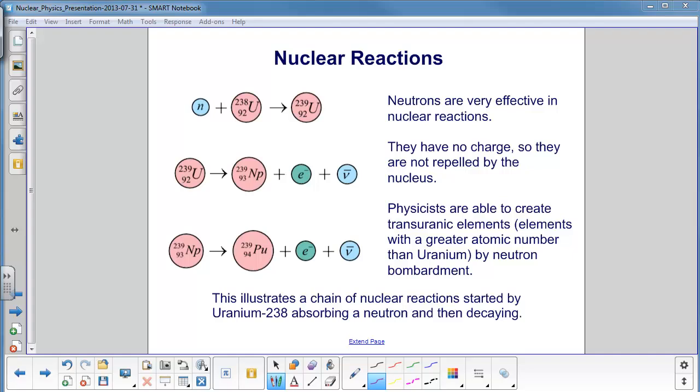Neutrons are very effective in nuclear reactions, and the main reason is right here. They have no charge, so they are not repelled by the nucleus. Had Rutherford done his gold foil experiment with neutrons, which of course they hadn't realized that neutrons existed at that time, the neutron would not have bounced off the nucleus. It would have been hard to find the nucleus because the neutron could have gone right into the nucleus and been absorbed by it. Physicists have been able to create elements with greater atomic numbers than uranium, and these are only created in the lab. They do not exist naturally on the Earth by neutron bombardment. So what we have at the top,